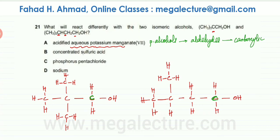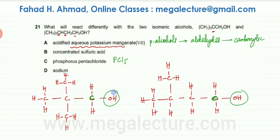Let's look at option C, which is phosphorus pentachloride, PCl5. What PCl5 does is replace the OH group in both cases with chlorine. There is going to be a substitution reaction when reacted with PCl5, so both of them are going to react in a similar way. Therefore PCl5 would not be the correct option.